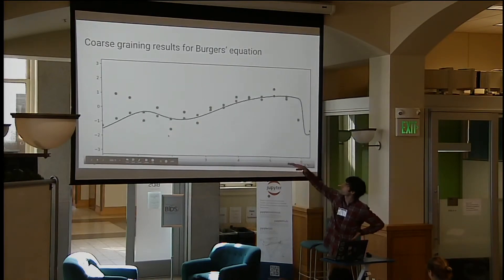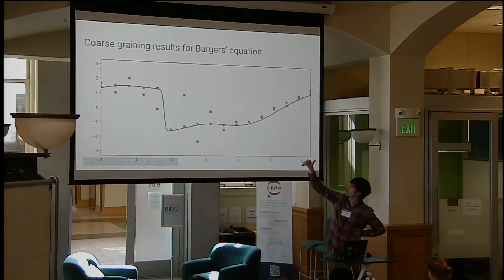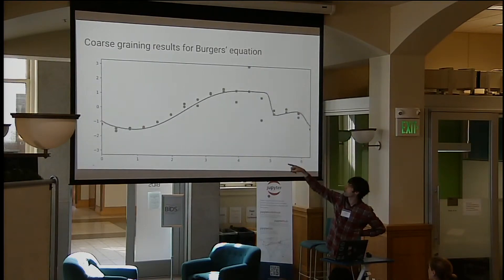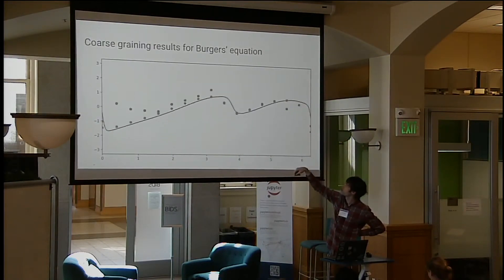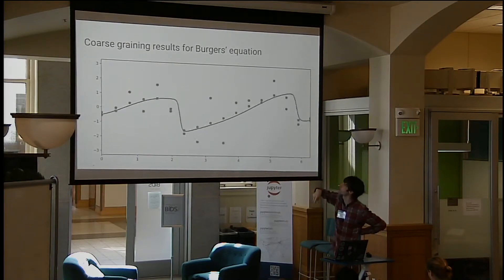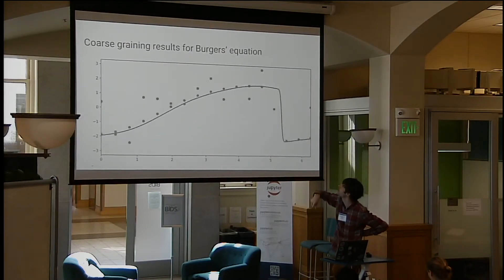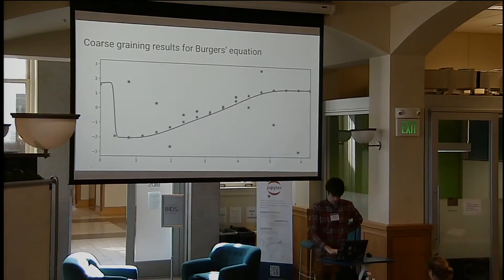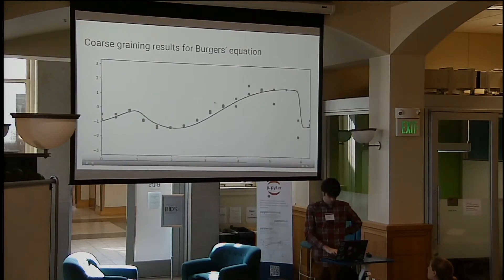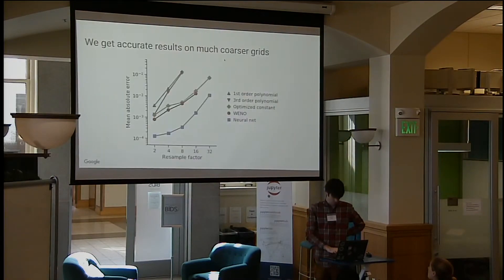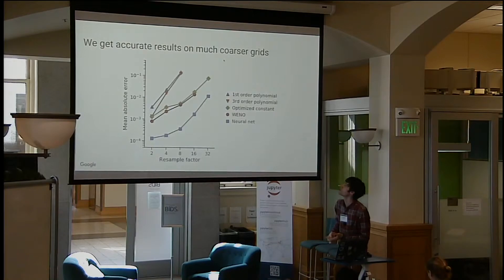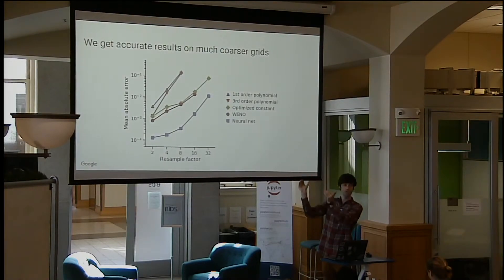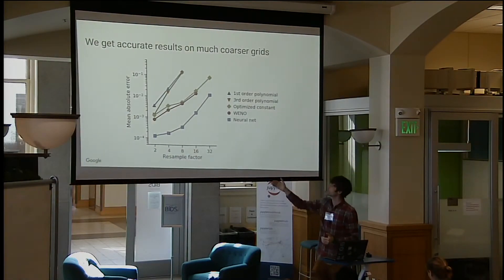This is an example of solving Burger's equation — you get these shock waves that move back and forth. The green dots are our neural net. The orange dots are a baseline which gives completely garbage results. Looking at this more systematically, we see that with our neural net methods we can get accurate results on much coarser grids.